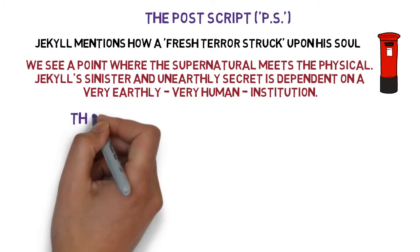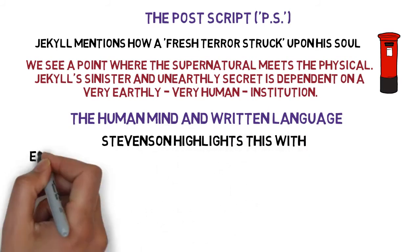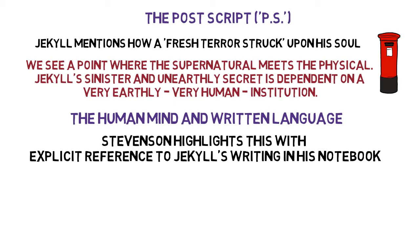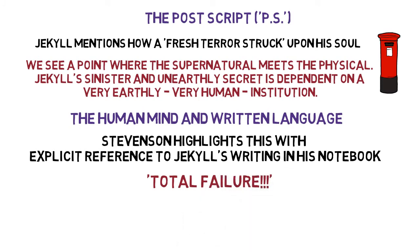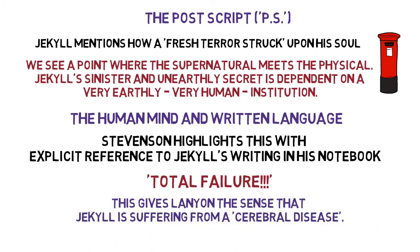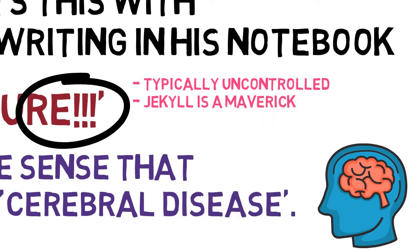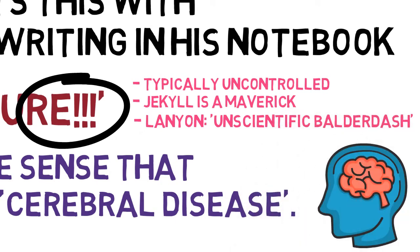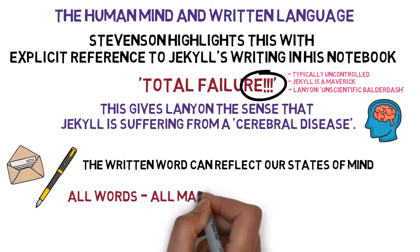We also see in this chapter the interplay between the human mind and written language. Stevenson highlights this with explicit reference to Jekyll's writing in his notebook. Other than a series of dates, there's little more than brief remarks, but Lanyon notices that early on Jekyll has written, followed by several marks of exclamation, 'total failure.' This, and the evidence before him in Jekyll's belongings, gives Lanyon the sense that Jekyll is suffering from a cerebral disease — a disease of the brain or the mind — and indeed Lanyon believes Jekyll to be mentally unwell. These exclamation marks seem typically uncontrolled, for in contrast to Lanyon, Jekyll is a maverick. You'll remember it was Lanyon who described Jekyll's science as 'unscientific balderdash.' Stevenson is highlighting here how the written word can reflect our states of mind, and in an epistolary novel made up of several different forms, he's bringing this to the forefront of our interpretation. All words, all marks on the page — all matter.